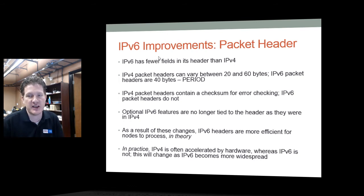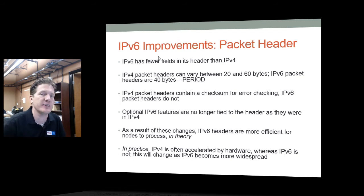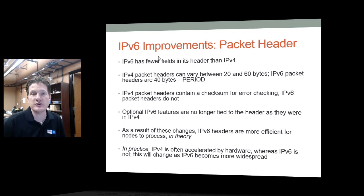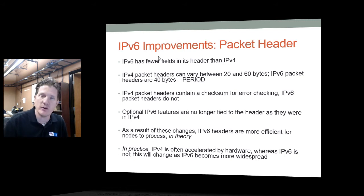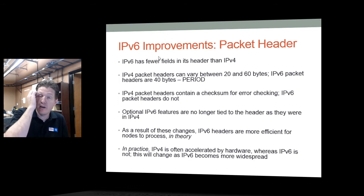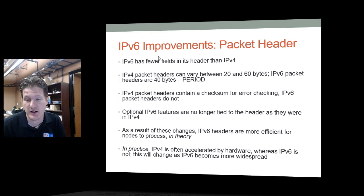IPv4 packets contain a checksum, whereas IPv6 does not — IPv6 relies on other protocols to perform that function. Optional IPv6 headers are no longer tied to the main header, whereas in IPv4 you had all those optional header features that had to be present whether you used them or not. IPv6 doesn't require that, so IPv6 can be much more efficient simply because of reduced header space.